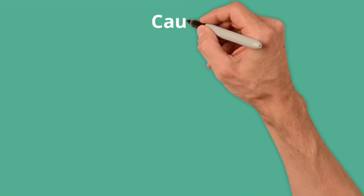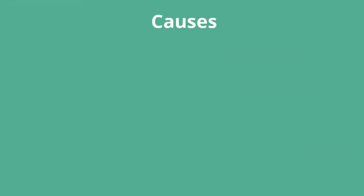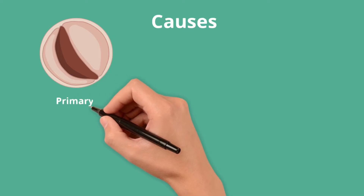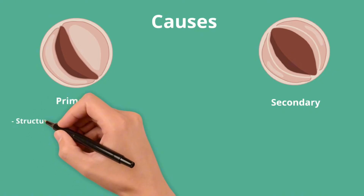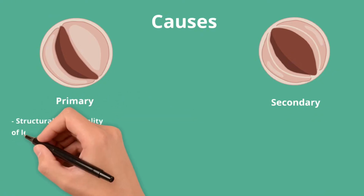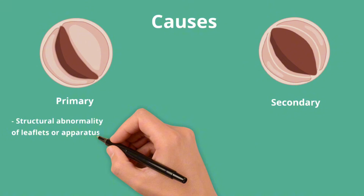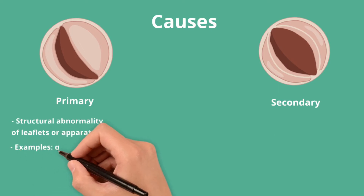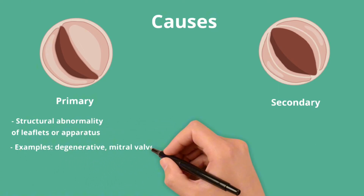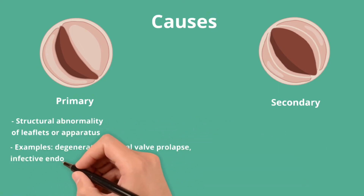Let's now consider the causes of mitral regurgitation. These are typically divided into primary and secondary. Primary mitral regurgitation is caused by structural abnormalities or damage to the leaflets, chordae or papillary muscles, resulting in failure of the valve to close adequately. Examples include degenerative mitral valve disease, mitral valve prolapse, infective endocarditis and rheumatic fever.